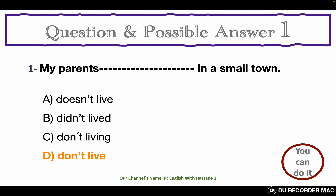Question and possible answer 1. All the questions of this grammar test are in the present simple negative. Choose the best answer A, B, C, or D. My parents ___ in a small town. A. Doesn't live. B. Didn't lived. C. Don't living. D. Don't live. The correct answer for this question is the letter D. Don't live.